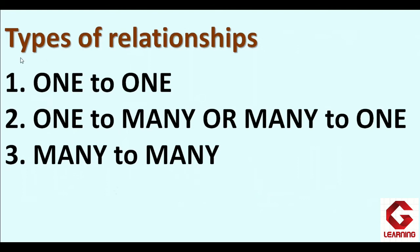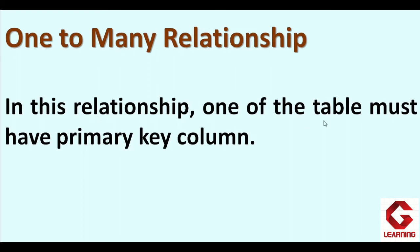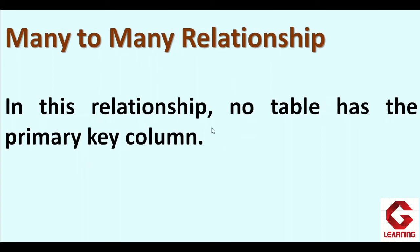Now, types of relationships: there are three types we can establish between tables. One-to-one: both tables must have primary key columns. One-to-many or many-to-one: one table must have a primary key column but the other table may not. Many-to-many: no table has a primary key column. So we can establish three different kinds of relationships between tables: one-to-one, one-to-many or many-to-one, and many-to-many.